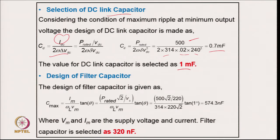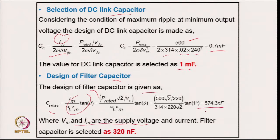Coming to the EMI filter capacitor design for Example 2, the capacitor is calculated from the same relation used earlier: C = I_m / (V_m × ω_l × tan θ), where θ is the displacement angle between supply voltage and current, and V_m and I_m are the peak supply voltage and current. Putting in the values gives 574.3 nF. A lower standard value of 320 nF is selected.